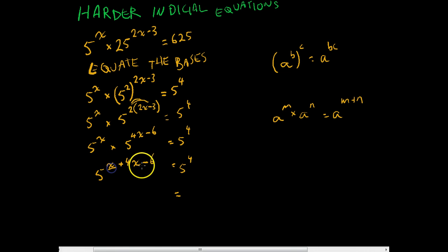We can group terms in here. So we'll end up with 5 to the power of 5x minus 6 equals 5 to the power of 4.